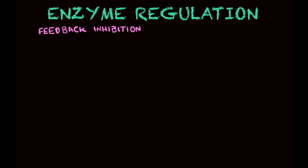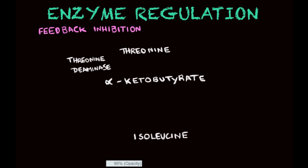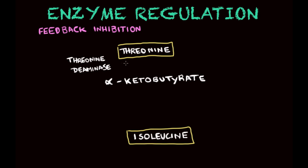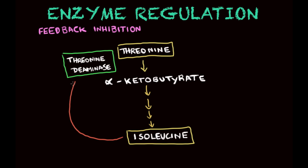Feedback inhibition is simply when the product of a pathway is going to inhibit a particular enzyme. To understand this a little better, I have an example of one pathway — one of many happening in your cells. This is when you go from threonine to isoleucine. Threonine is going to become alpha-ketobutyrate through this enzyme here, threonine deaminase.